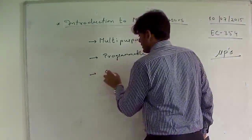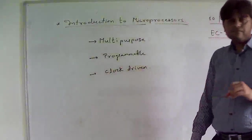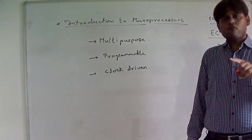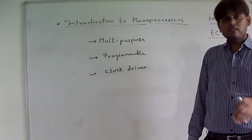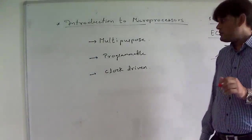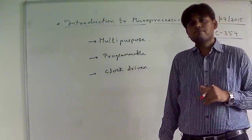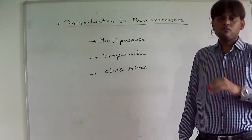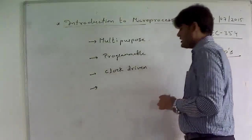The next thing we can add to the definition is that it is a clock-driven device. For the working of the microprocessor, an external clock signal is given to the integrated circuit, and with the synchronization of that clock signal it will work. So microprocessor is a clock-driven electronic device. Basically the 8085 microprocessor works from 3 MHz to 5 or 6 MHz.